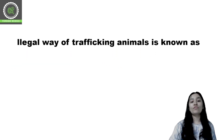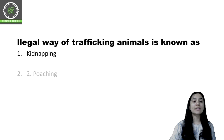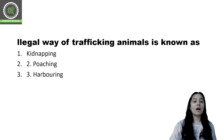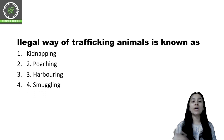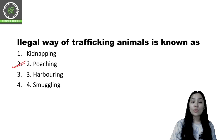Question number 5: The illegal way of trafficking animals is known as — kidnapping, poaching, harboring, or smuggling? The correct answer is poaching. When animals are illegally transported, it comes under poaching.